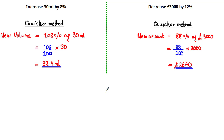A multiplier is a number used in mathematics to increase or decrease an amount. If you're using a calculator, it's a much more quick and efficient way to work out percentage changes in just a single calculation.